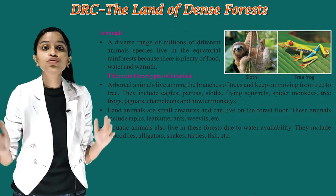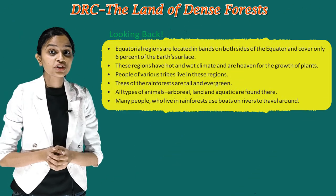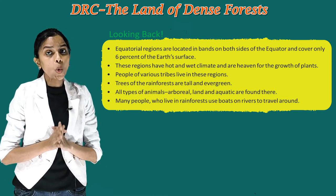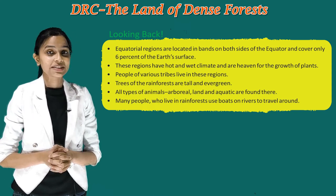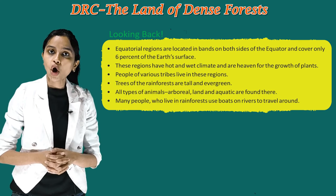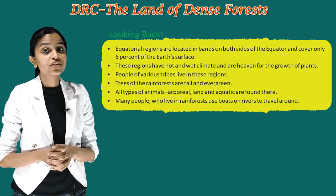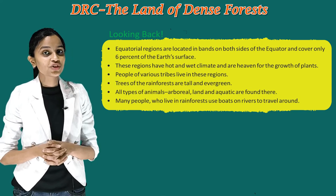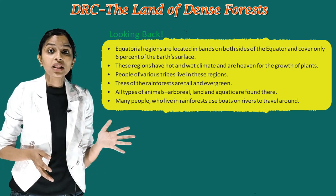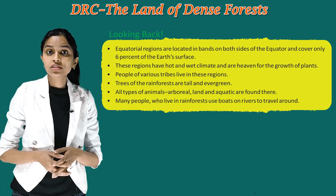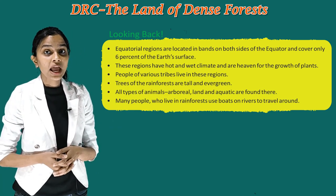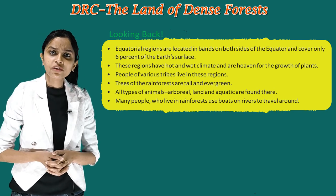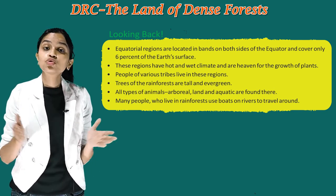Now children, it's time to move towards looking back. Equatorial regions are located in bands on both sides of the equator and cover only 6% of the earth's surface. These regions have a hot and wet climate and are heaven for the growth of plants. People of various tribes live in these regions. Trees of the rainforest are tall and evergreen. All types of animals — arboreal, land and aquatic — are found there. Many people who live in the rainforest use boats on rivers to travel around.